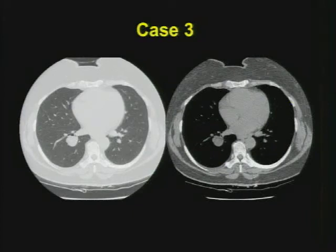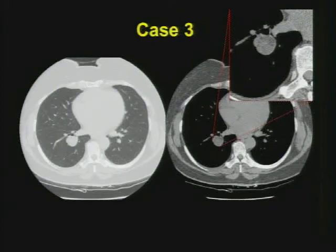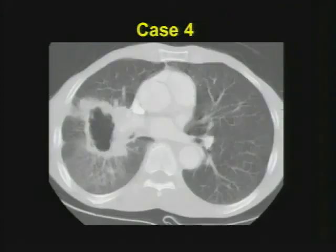Case number three: a mass. I'll give you a zoomed-in image. How would you characterize the mass? Remember that you'll want to describe features including density. Will that allow you to say definitively that this is benign? What would your differential be for this lesion?